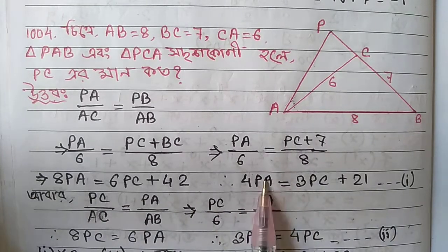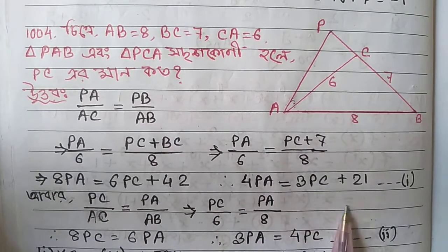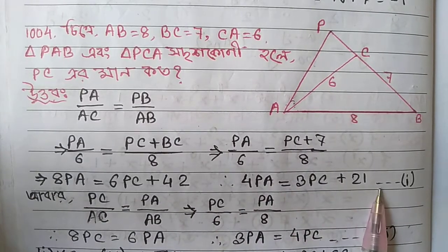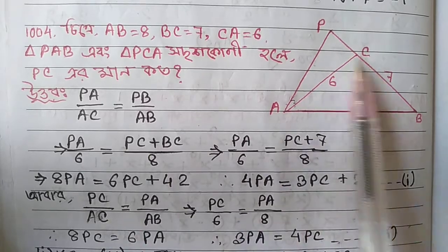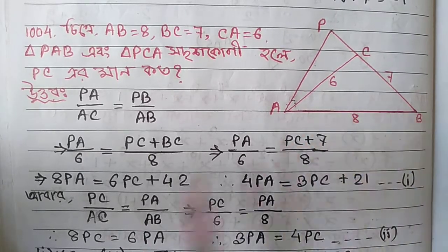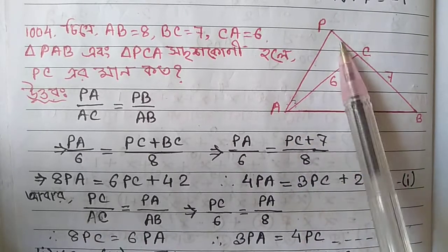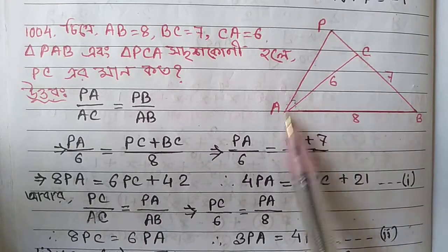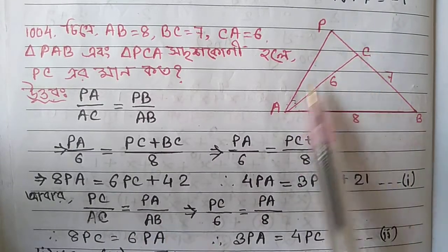PA equals 3PC plus 21. So this will be the same — PC by AC equals PA by AB.